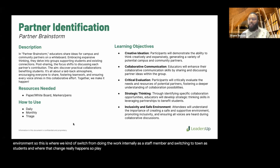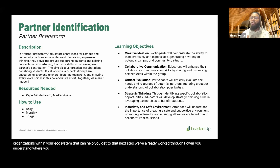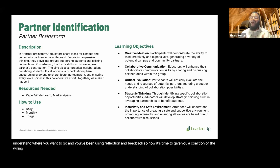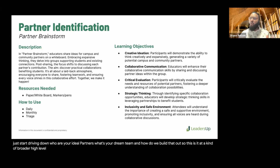We've already worked through power — you understand where you want to go, and you've been using reflection and feedback. Now it's time to give you a coalition of the willing to help you in your journey to economic empowerment. You only need paper, whiteboard, markers, and pens to start jotting down who are your ideal partners, what's your dream team, and how do we build that out. This is a broader high-level view, and we want to hear from you — what questions do you have?